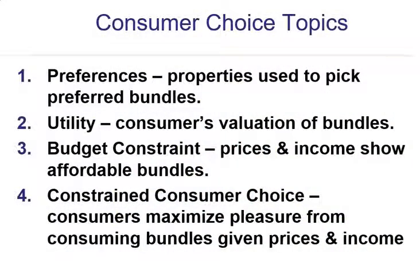So here are the topics at hand in this chapter. Preferences — we'll talk about preferences and the properties of the bundles that people prefer. Utility is another topic we will discuss, and utility is a measure of someone's happiness or evaluation of the potential bundles. A budget constraint combines both prices and your income to show you what affordable bundles are available to you.